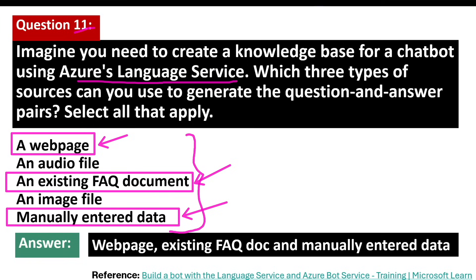Let's look at a real-world example. An online retailer can use a chatbot powered with Azure Language Service to handle customer inquiries. The chatbot answers questions about order status, shipping times, product availability, and return policies. This automated support enhances the shopping experience by providing instant responses and freeing up human agents to address more complex issues.